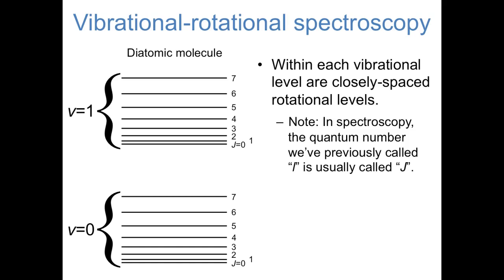I'd like to point out in this diagram that the notation actually changes slightly from what we've seen before. Just as we saw in the harmonic oscillator model, the vibrational energy levels correspond to a quantum number V, that can have any value from 0, 1, 2, 3, etc. But when we previously looked at rotational motion, we said that the energy levels of the spherical harmonic functions depended on a quantum number lowercase l. In spectroscopy, the quantum number associated with rotational motion is usually called capital J. So just be aware that the capital J's in this video are completely analogous to the lowercase l's you saw previously.